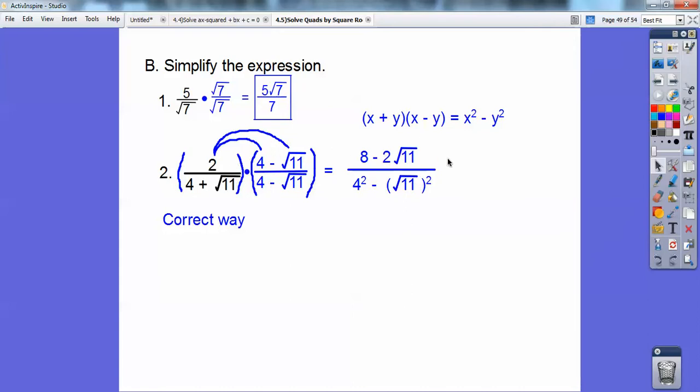And 4 squared is 16. Root 11 squared is plain old 11. Check it out. No more radicals, and then subtract 16 minus 11, and you get 5. So it's 8 minus 2 root 11 over 5.